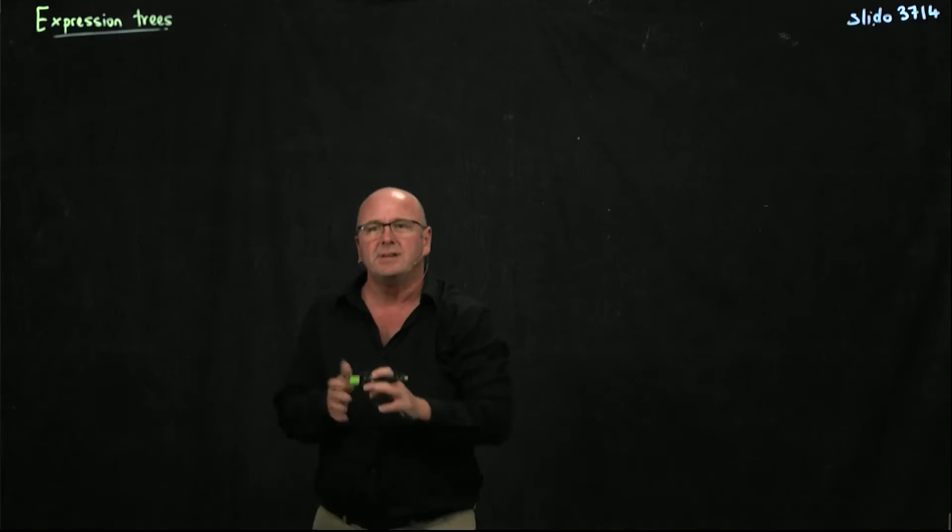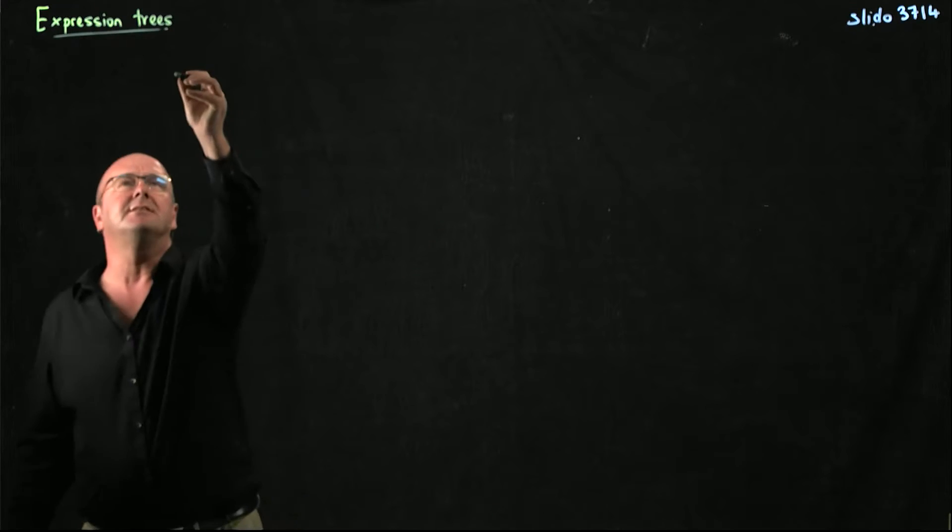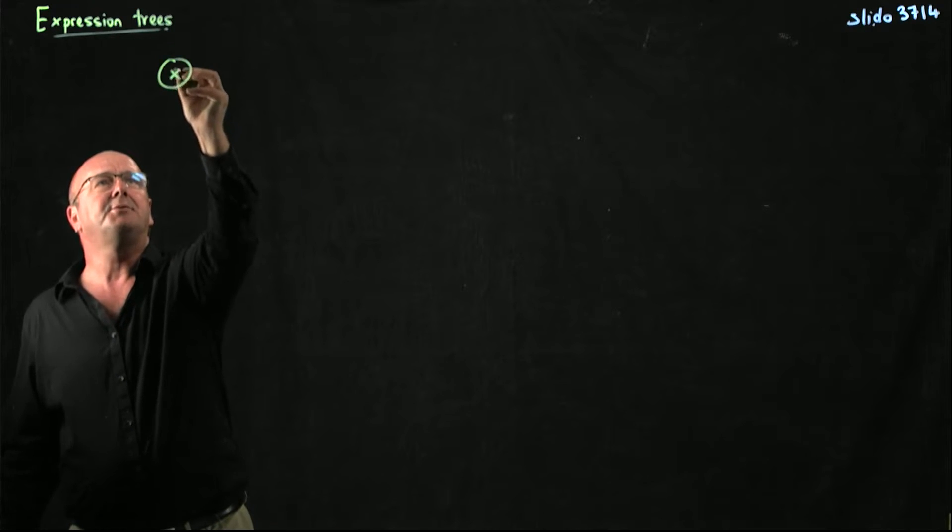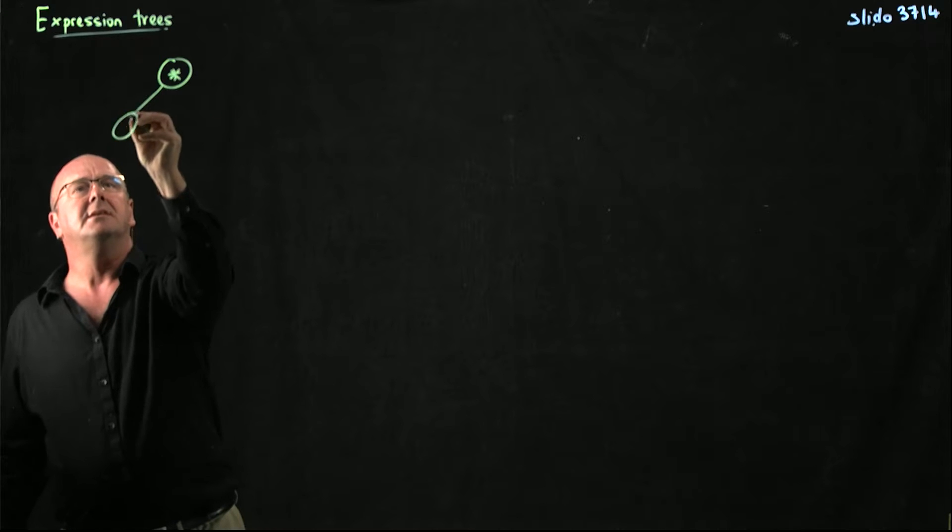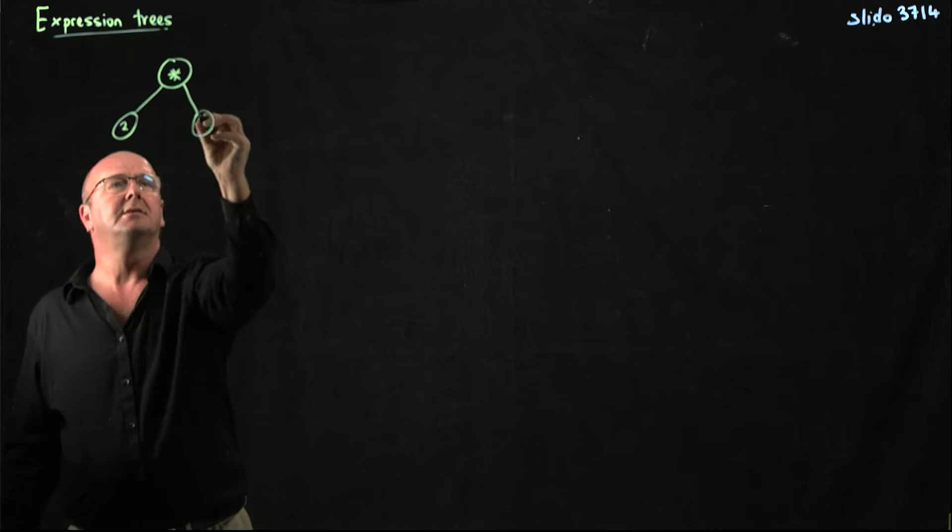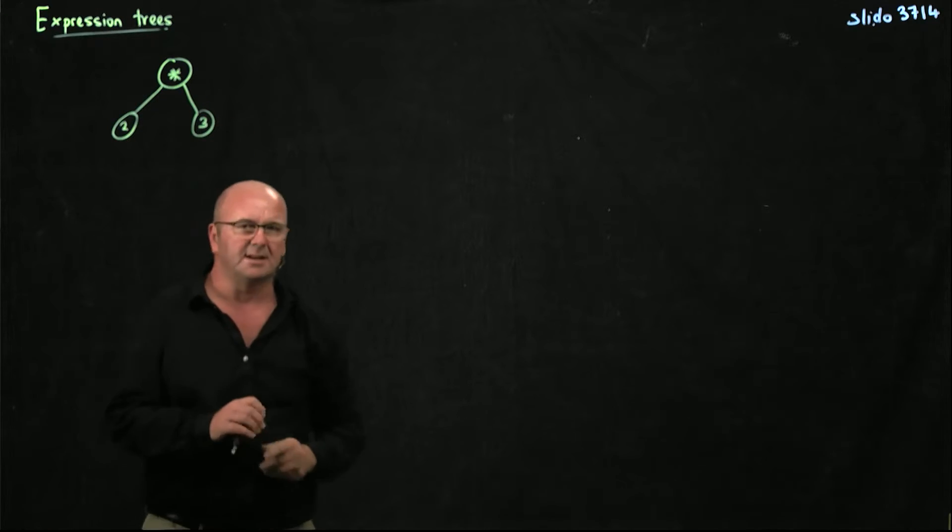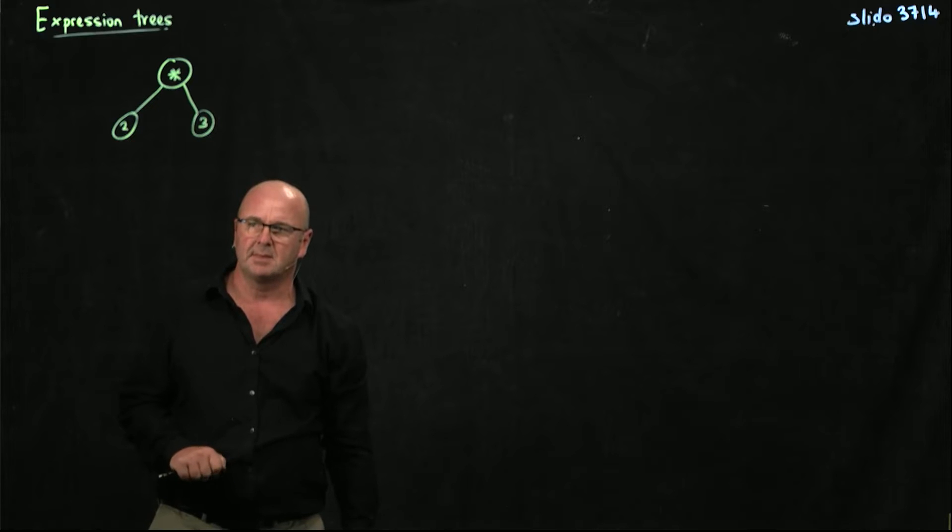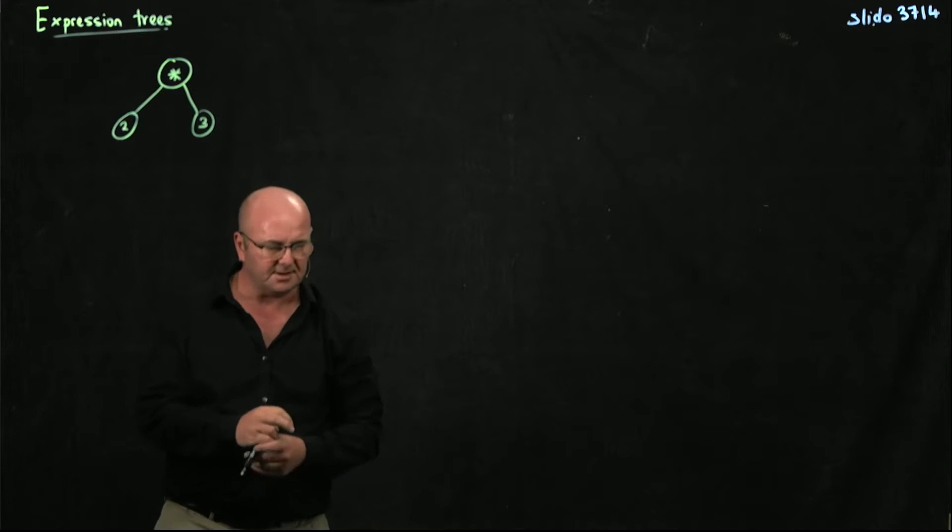So if I have, here's a really simple tree, only has three nodes. So I have a multiplication, I have the number two, and I have the number three. Real simple tree, only three nodes.